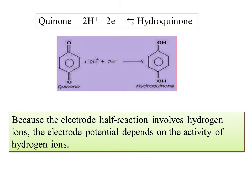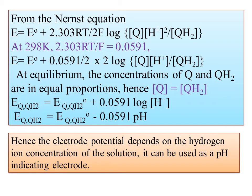Because the electrode half-reaction involves hydrogen ions, the electrode potential depends upon the activity of the hydrogen ions. The Nernst equation is: E = E₀ + (2.303RT / 2F) × log([quinone] / [quinhydrone]). We use 2.303RT/F = 0.0591 at temperature 298 K, substituting to get E = E₀ + (0.0591 / 2) × log([quinone] / [quinhydrone]).